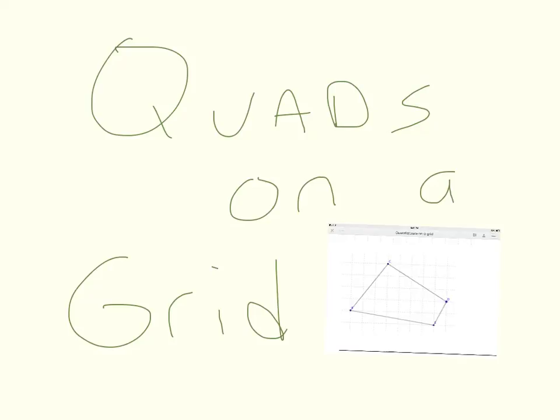We want to look at our quadrilaterals one last time and put them on a grid to be able to prove, determine, and show that they are one of the special quadrilaterals or just a generic quadrilateral.